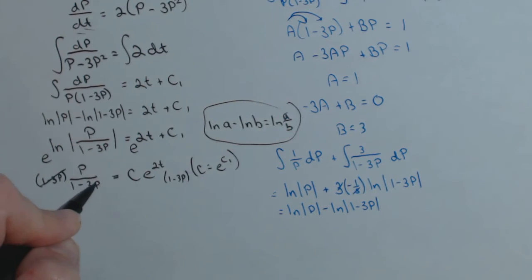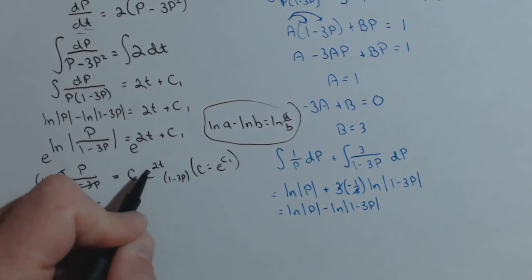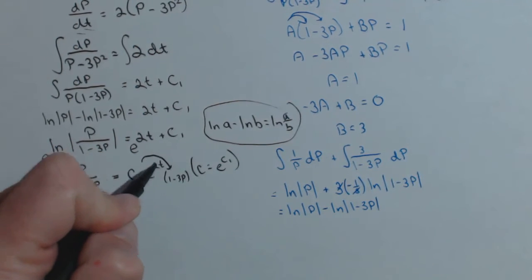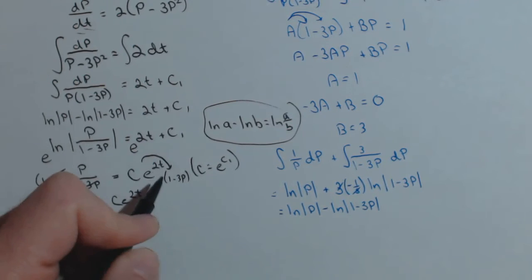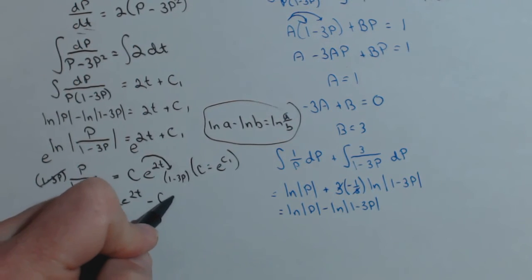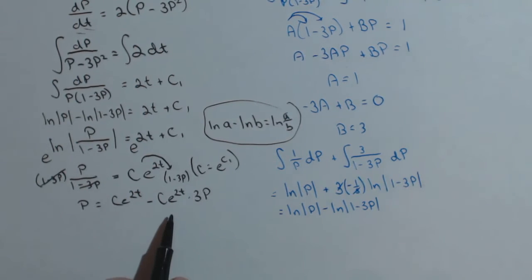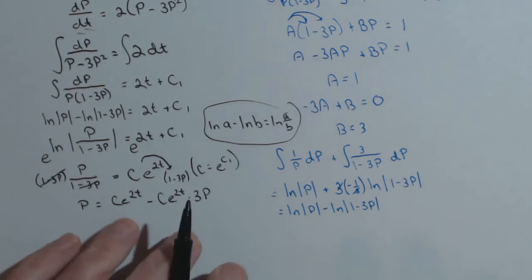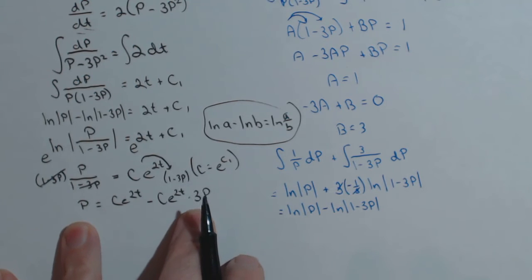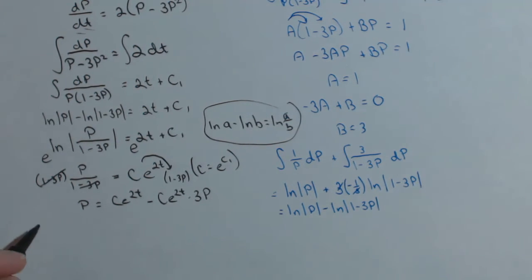That'll get rid of it over here. Over here we're going to have to distribute. So p equals ce to the 2t minus ce to the 2t times 3p. All right, now what we're going to do, we have two terms with p in it, which we're trying to solve. We need to get those on the same side.